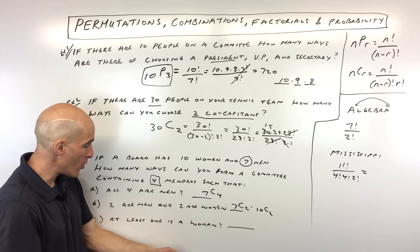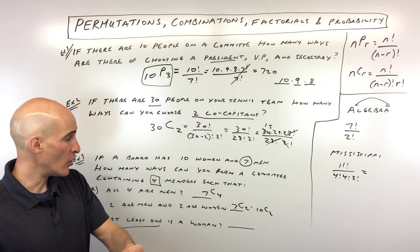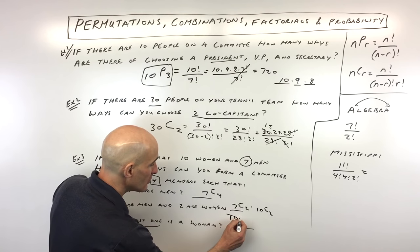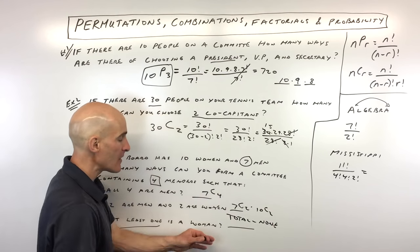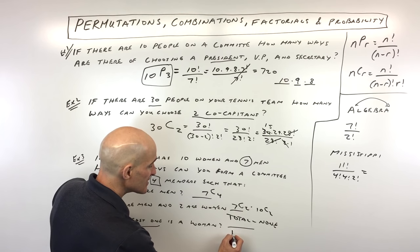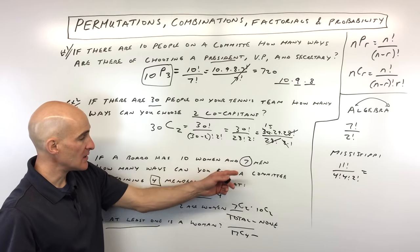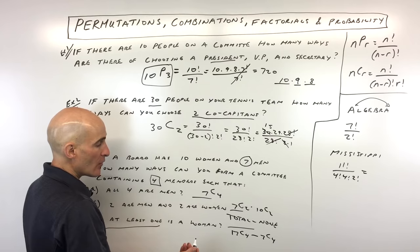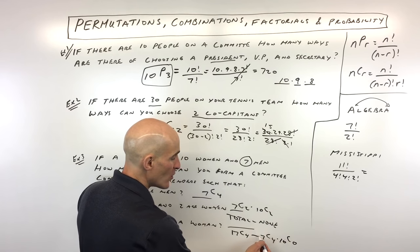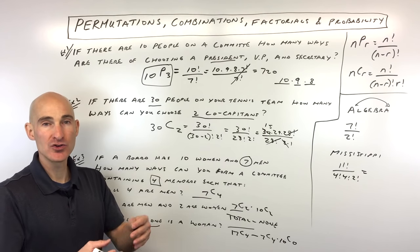For 'at least one woman,' at least means one, two, three, or all four could be women. Instead of calculating each case individually, use the shortcut: when you see 'at least one,' take the total minus none. The total is 17C4 — all ways to form a committee of four from 17 people — minus 7C4, the committees with no women, which is all four chosen from the seven men. This gives all committees with at least one woman.